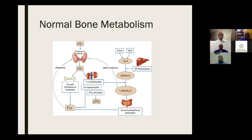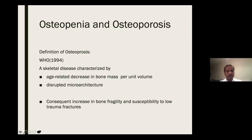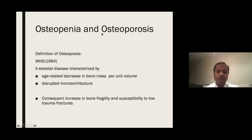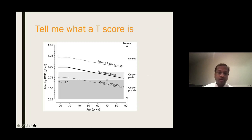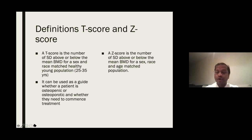Having known the background of normal bone metabolism, we start with osteoporosis. On definition, WHO is very clear: osteoporosis is a skeletal disease characterized by age-related decrease in bone mass per unit volume with disrupted microarchitecture. Consequently, there is increased bone fragility and susceptibility to low trauma fractures. A question can be: tell me what a T-score is. You may be handed a prop showing bone mineral density, with T-scores on one axis and age on the other. A T-score is a number of standard deviations above or below the mean bone mineral density for a sex- and race-matched healthy young population. It can be used as a guide whether a patient is osteopenic or osteoporotic and whether they need to commence treatment.